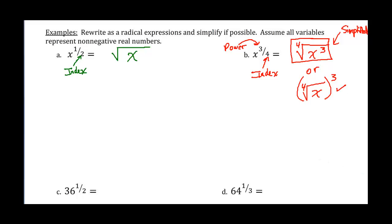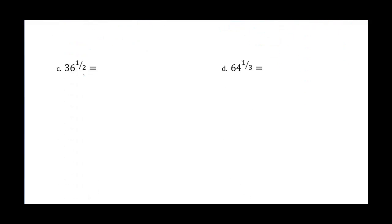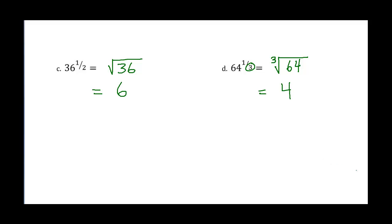Let's look at examples including values. In part c, we have 36 to the 1 half power. Since 2 is my index, this is the same as the square root of 36, which is 6. In part d, 64 to the 1 third power. The index is 3, so I get the cube root of 64. What number multiplied by itself 3 times gives 64? That lucky number is 4.